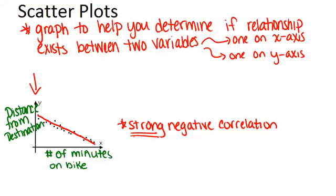You could also have a weak negative correlation where the points do tend to go down as one variable goes up the other goes down, but they're not as close to being a perfect line.